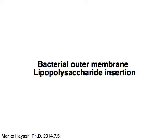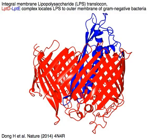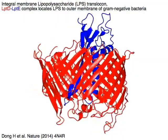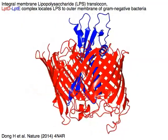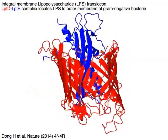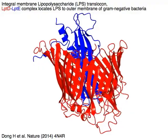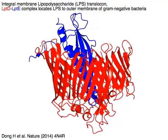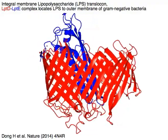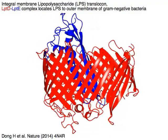Lipopolysaccharide insertion to the bacterial outer membrane. The integral membrane lipopolysaccharide, or LPS, translocon — with red LPTD and blue LPT complex — locates LPS to the outer membrane of gram-negative bacteria.